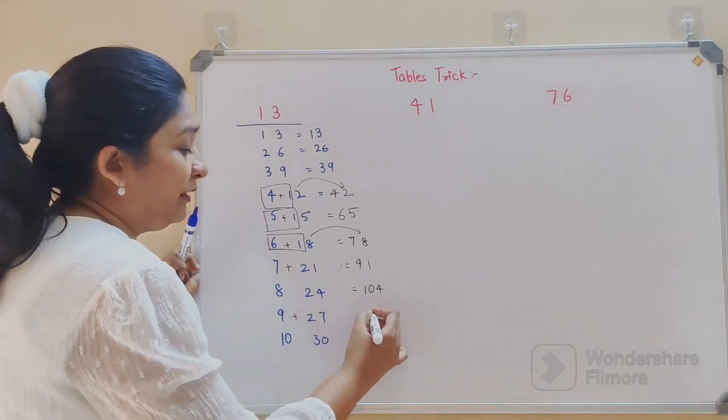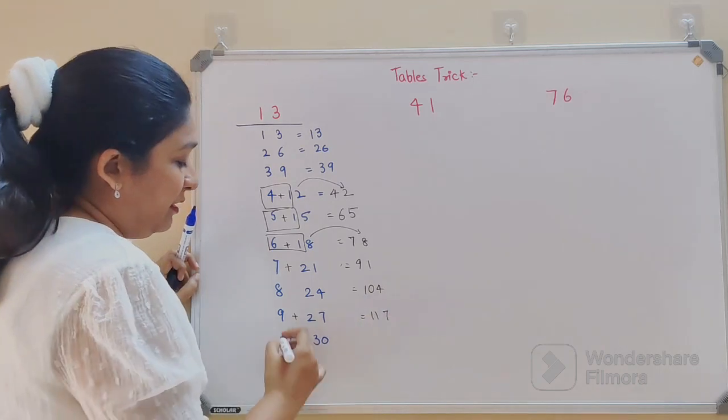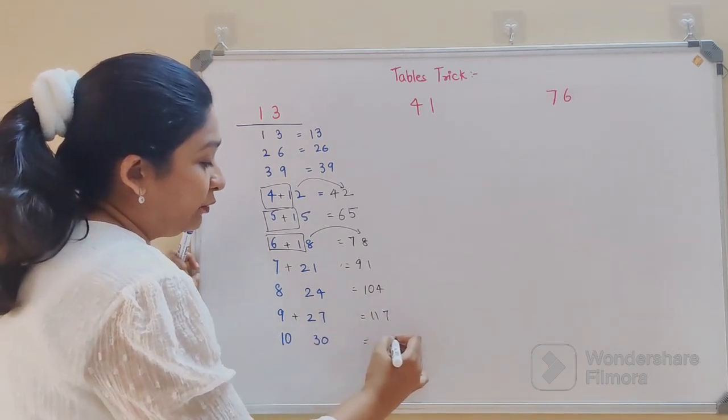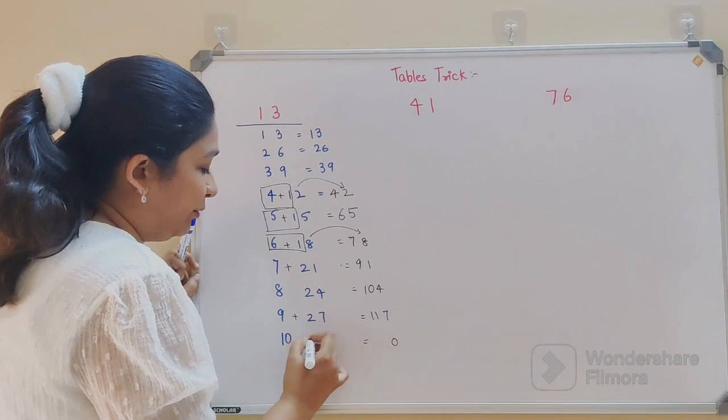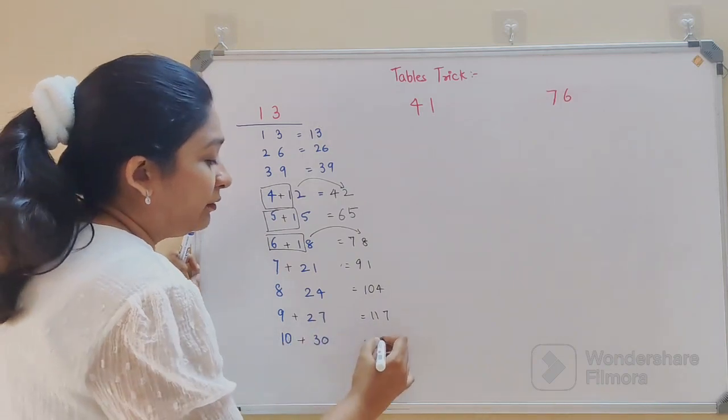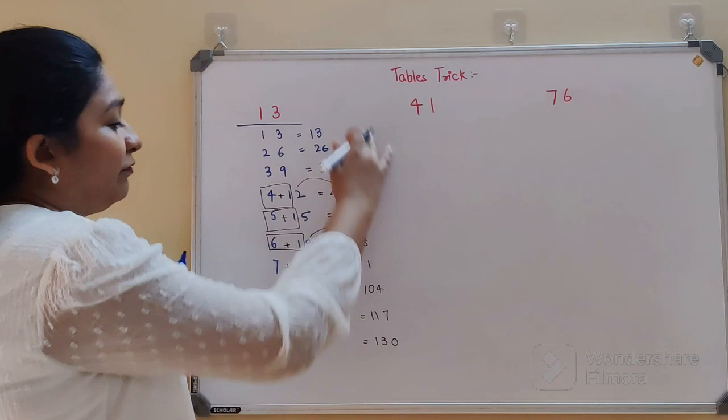Similarly, 9 plus 2 gets you 11 and 7. Now we have this 0 will continue as it is, and then you add 10 plus 3, that gets you 13. So now if you see here, you have got the entire answer for 13's table.